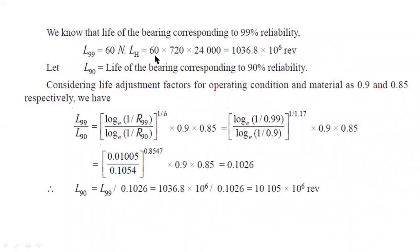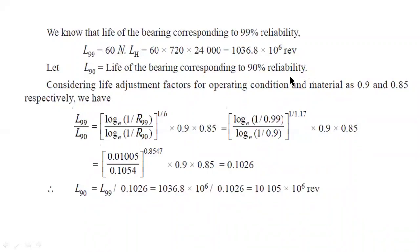The total life of bearing in revolutions equals 1036.8 × 10⁶ revolutions. Note that 10⁶ equals 1 million revolutions (10 lakh revolutions). Now we need to find the life of bearing for 90% reliability using the reliability formula.